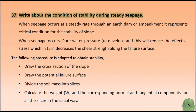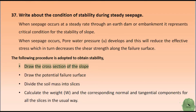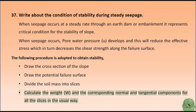Write about the condition of stability during steady seepage. When seepage occurs at a steady rate through an earth dam or embankment, it represents a critical condition for the stability of the slope. When seepage occurs, pore water pressure U develops and this will reduce the effective stress, which in turn decreases the shear strength along the failure surface. The following procedure is adopted to obtain stability: draw the cross-section of the slope, draw the potential failure surface, divide the soil mass into slices, and calculate the weight and corresponding normal and tangential components for all the slices.